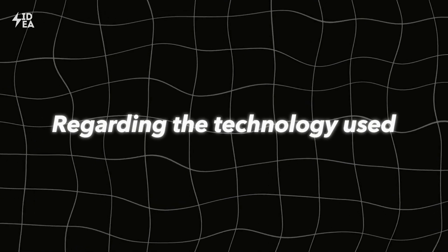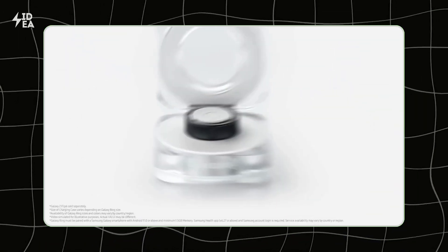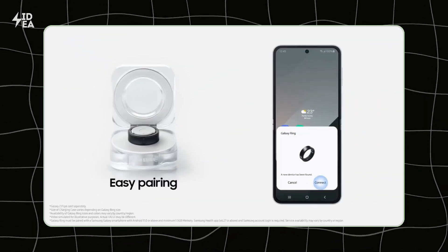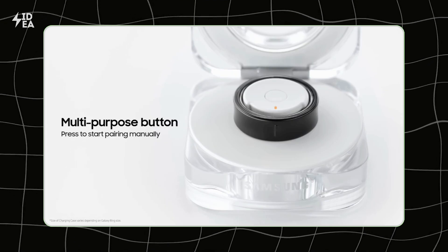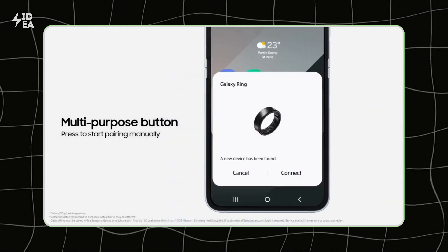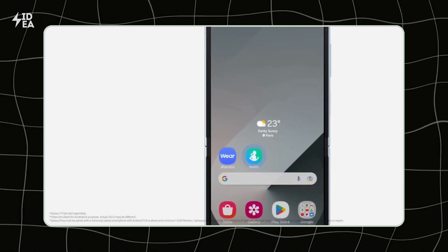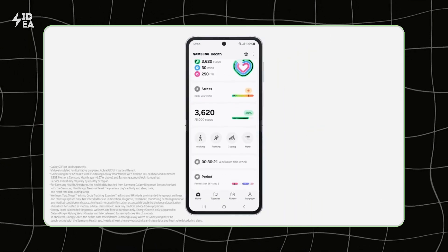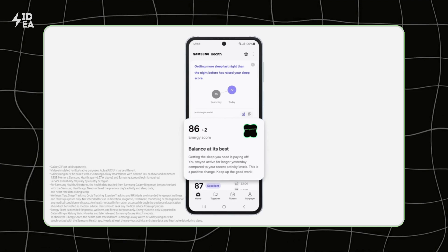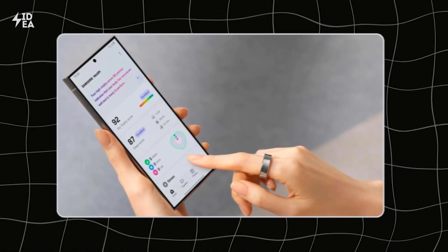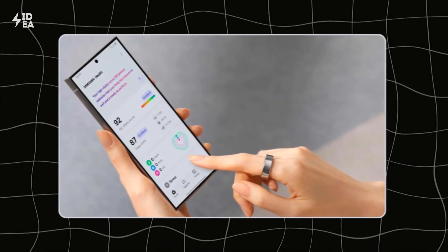Regarding the technology used, the Galaxy Ring relies on Bluetooth to communicate with your smartphone and its various apps. This technology ensures a stable and consistent connection, allowing you to continuously benefit from the ring's features without interruption. Additionally, the ring supports automatic software updates, ensuring you always receive the latest improvements and new features regularly.